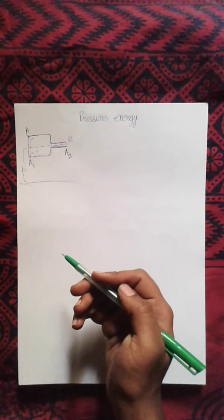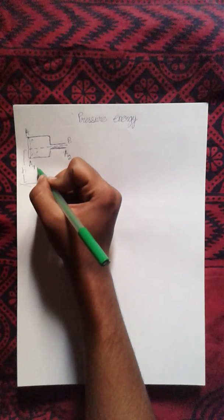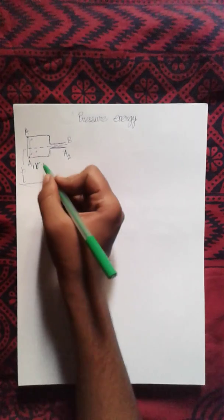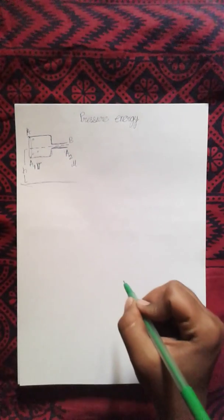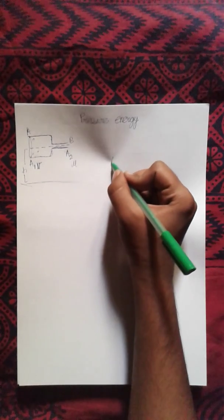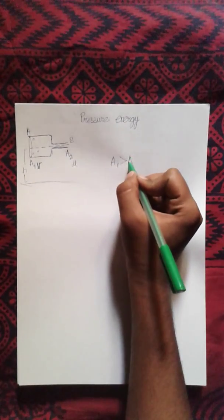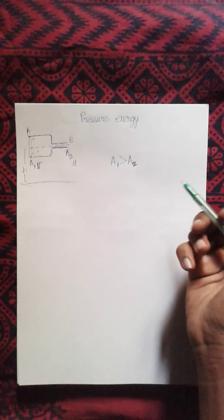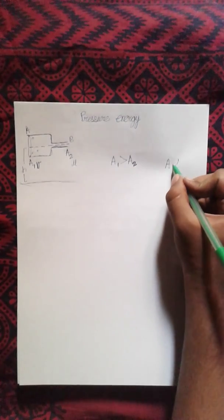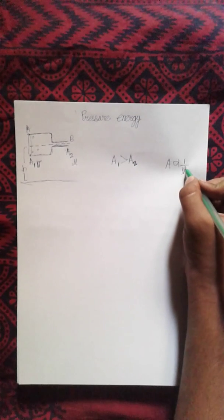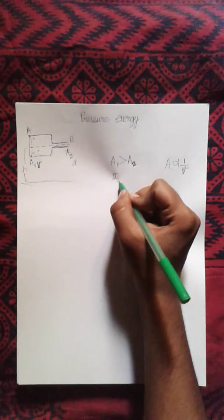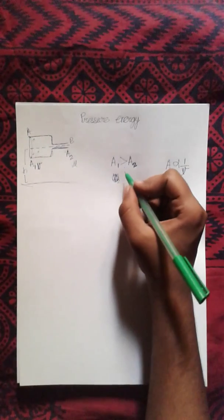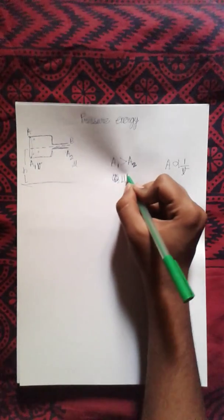So what do we observe here? Let the velocity of fluid at point A be v and at point B be u. Here we surely can tell that A1 is greater than A2. So we already know that area is inversely proportional to velocity, so we can write u is greater than v.